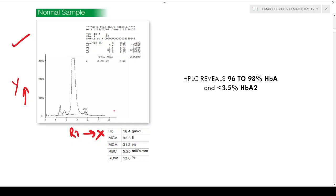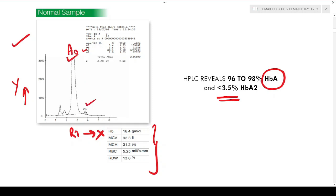This is a normal sample. All parameters are basically normal. In a normal adult, HbA is in the range of 96 to 98% — quite high. The A2 levels are less than 3.5%. This is the normal A0, this is the A2, and over here we have HbF and the different analytes — this is the normal adult sample.